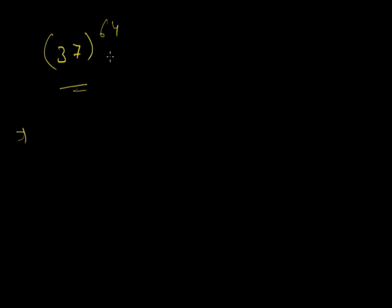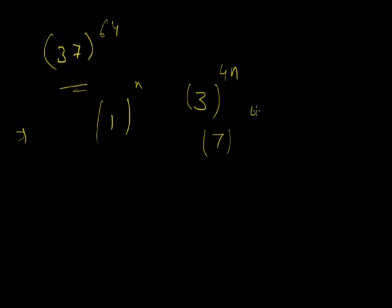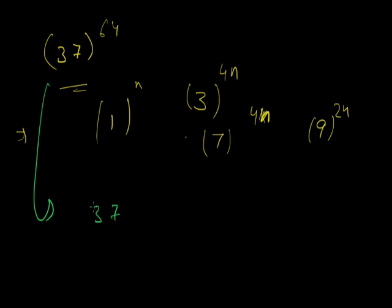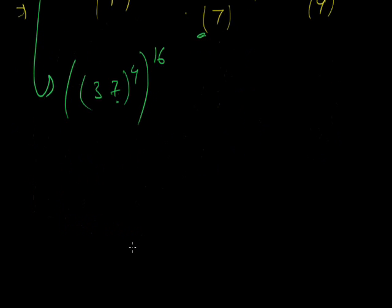Let's solve 37 raised to power 64. We split this as (37⁴)^16, making the unit digit 1. Now, 37² = (50 − 13)², and last two digits of 13² are 69. So 37² ends in 69. Then 37⁴ = (37²)² = 69², and 69 = 50 + 19, so last two digits of 69² equal last two digits of 19², which is 361, giving 61. So 37⁴ ends in 61.